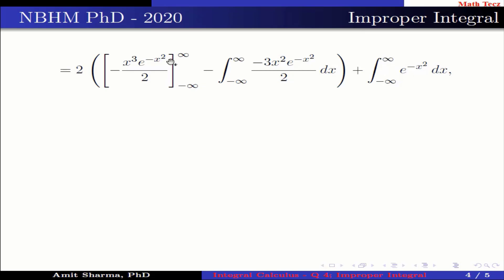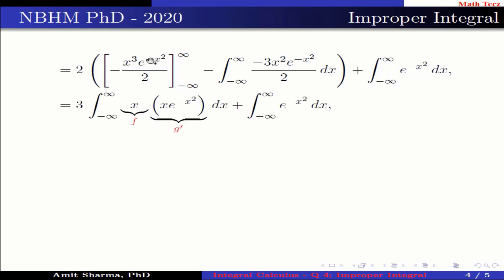When substituting the limits ∞ and −∞, the boundary term becomes 0. This further implies we have 3·∫_{−∞}^{∞} x·(x·e^(−x²)) dx plus ∫_{−∞}^{∞} e^(−x²) dx. Here x is represented by f and x·e^(−x²) is represented by g′.